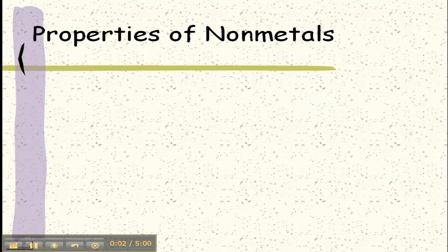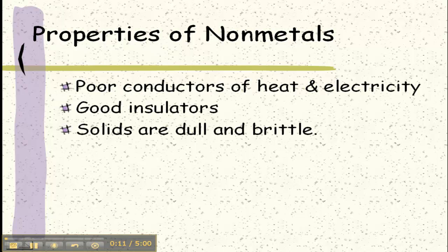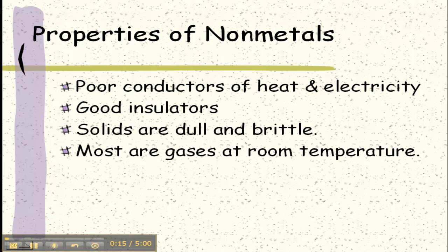Properties of nonmetals are pretty much going to be the opposite. They're poor conductors of heat and electricity, which makes them good insulators. The solids, when they are solid, are dull and brittle, like sulfur and phosphorus. Most of them are gases at room temperature.